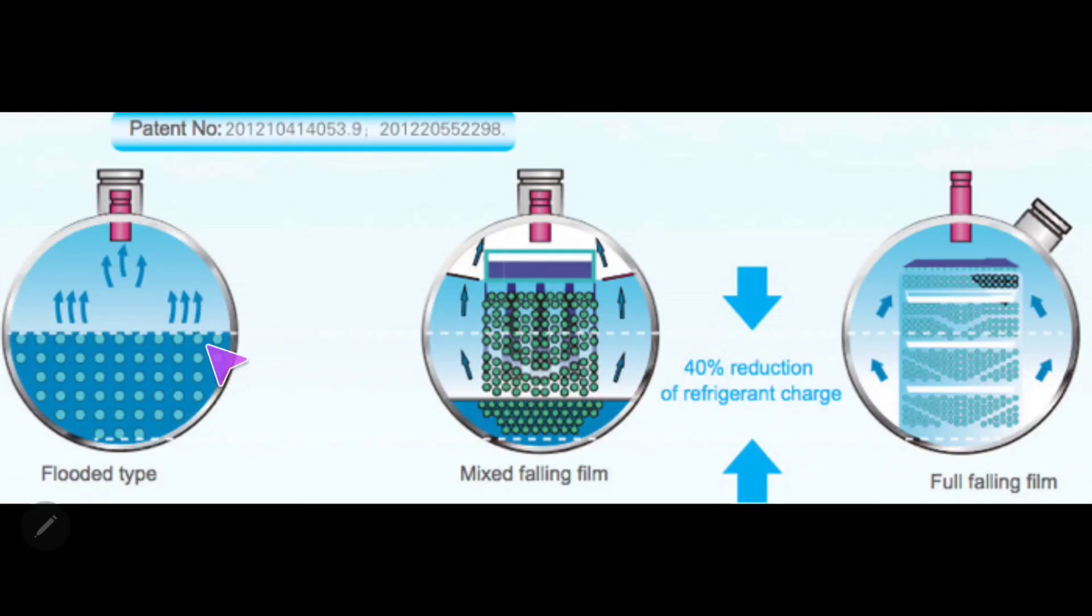These specifically we're going to focus more on the evaporator side, and it's going to apply either way. My terminology will be more oriented towards the evaporator low pressure side. As you can see, we have a flooded type, a mixed falling film also known as a hybrid system, and a full falling film.